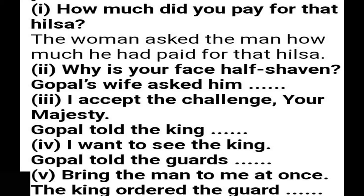Fourth one: 'I want to see the king.' Gopal told the guards that he wanted to see the king. 'I want to see the king' is direct speech, and Gopal told the guards that he wanted to see the king is reported speech. Last one: 'Bring the man to me at once.' The king ordered the guard to bring the man to him at once.